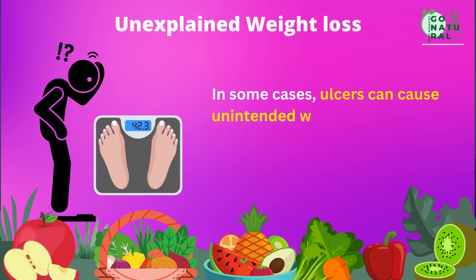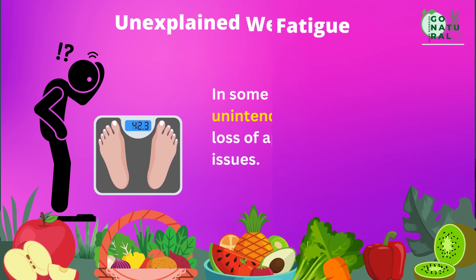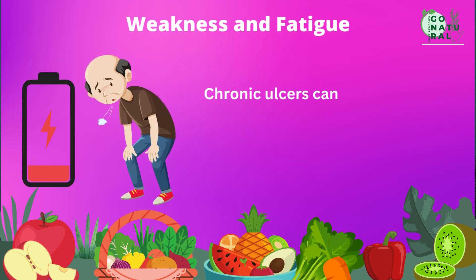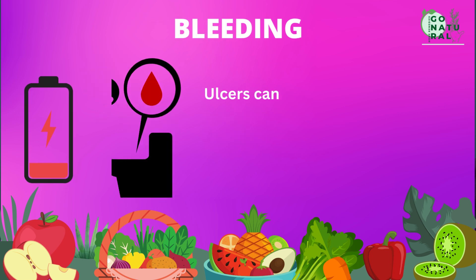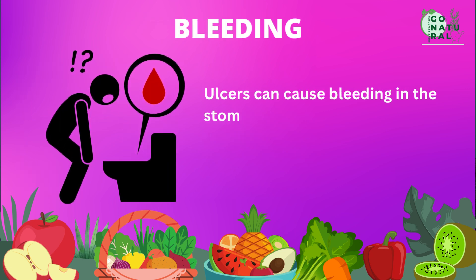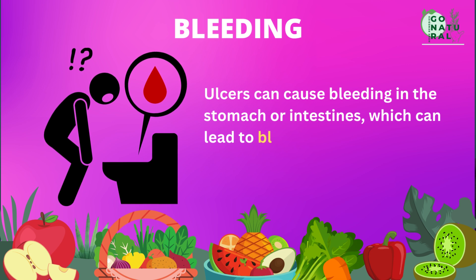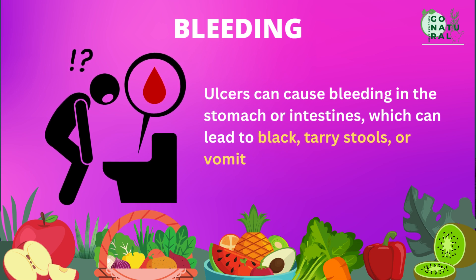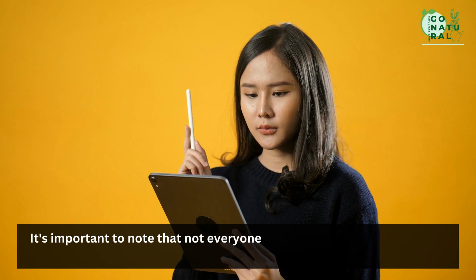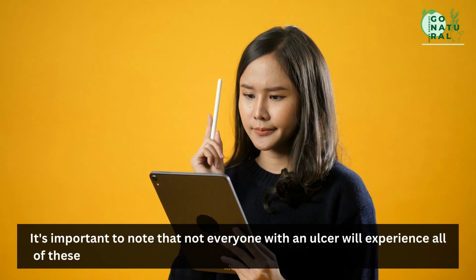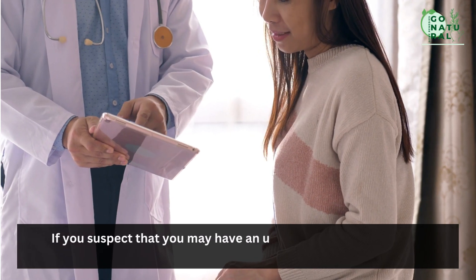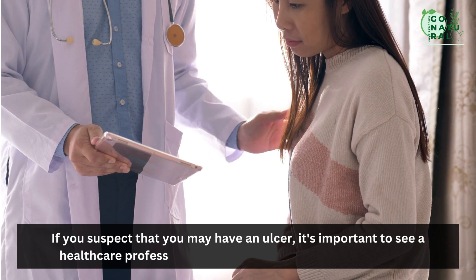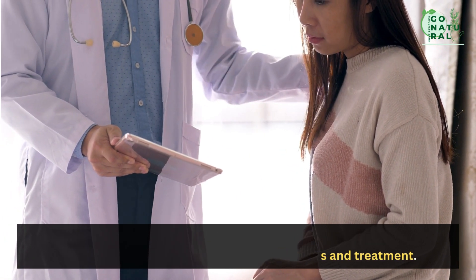Unexplained weight loss — in some cases, ulcers can cause unintended weight loss due to a loss of appetite and digestive issues. Weakness and fatigue — chronic ulcers can cause weakness and a general feeling of malaise. Bleeding — ulcers can cause bleeding in the stomach or intestines, which can lead to black, tarry stools or vomiting blood. It's important to note that not everyone with an ulcer will experience all of these symptoms, and some may not experience any symptoms at all. If you suspect that you may have an ulcer, it's important to see a healthcare professional for a proper diagnosis and treatment.